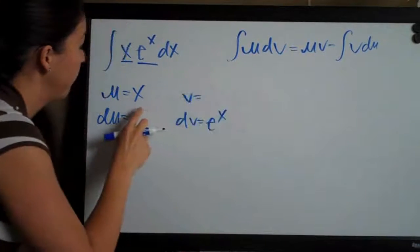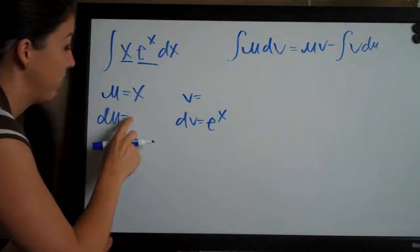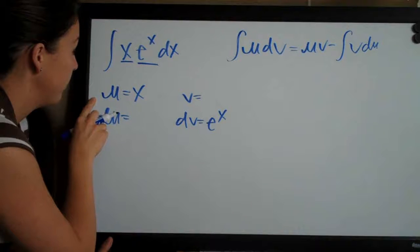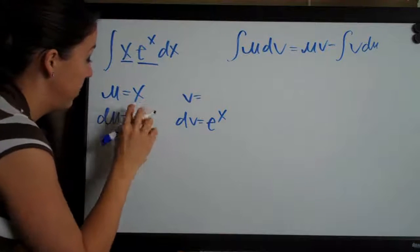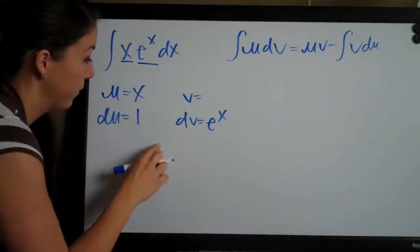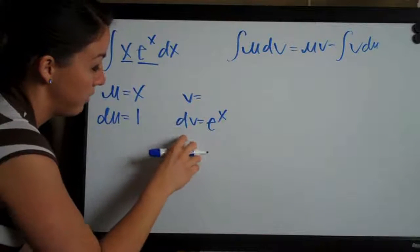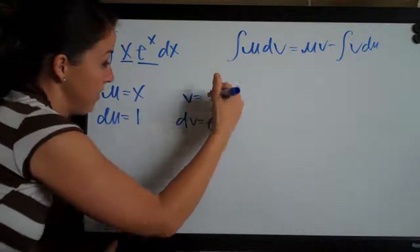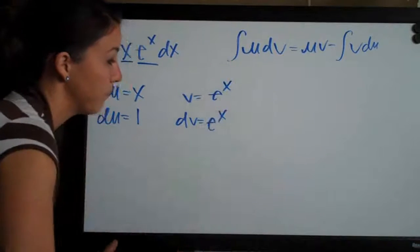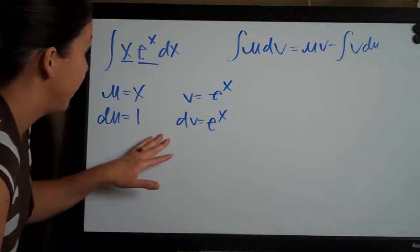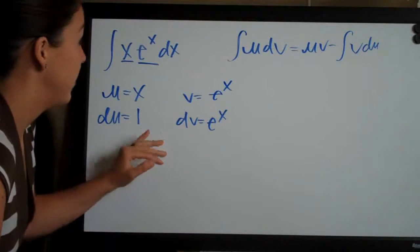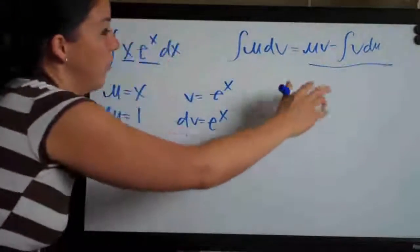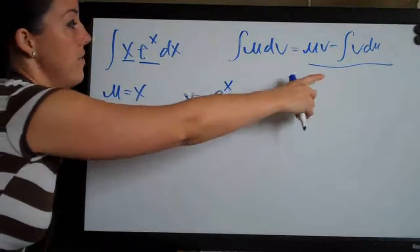From u and dv, we need to find du and v. We find du by taking the derivative of u — the derivative of x is just one. We determine v by taking the integral of e to the x, which is still e to the x. Now that we've found these four identities, we can plug them into the right side of the equation.